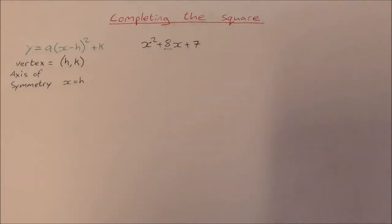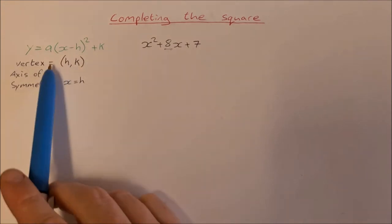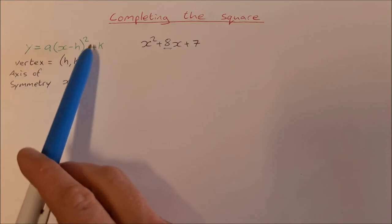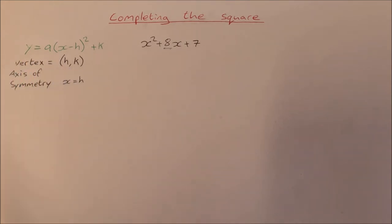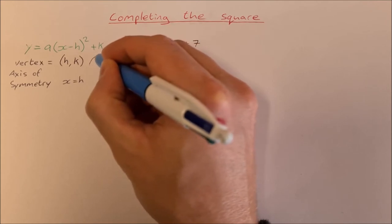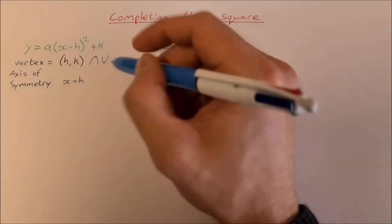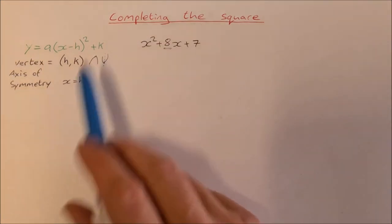In this video we're going to take a look at completing the square. Completing the square is when you take a quadratic trinomial and write it in this form: y = a(x - h)² + k, where h and k are the coordinates of the vertex of the quadratic, that is the highest point or the lowest point. And then x = h is the axis of symmetry, the line where the quadratic is symmetrical on either side.